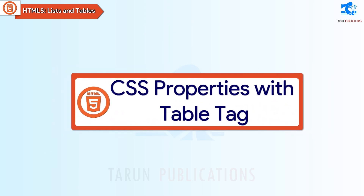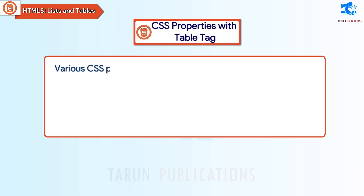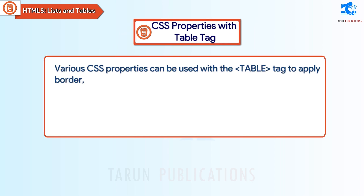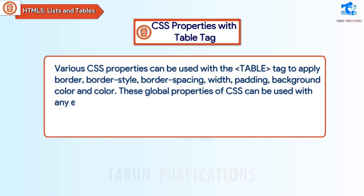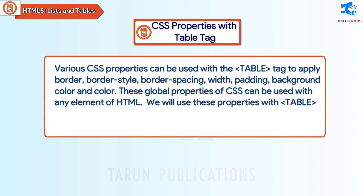CSS Properties with Table Tags. Various CSS properties can be used with the table tags to apply border, border-style, border-spacing, width, padding, background-color, and color. These global properties of CSS can be used with any element of HTML. We will use these properties with table tags to create a table in HTML.